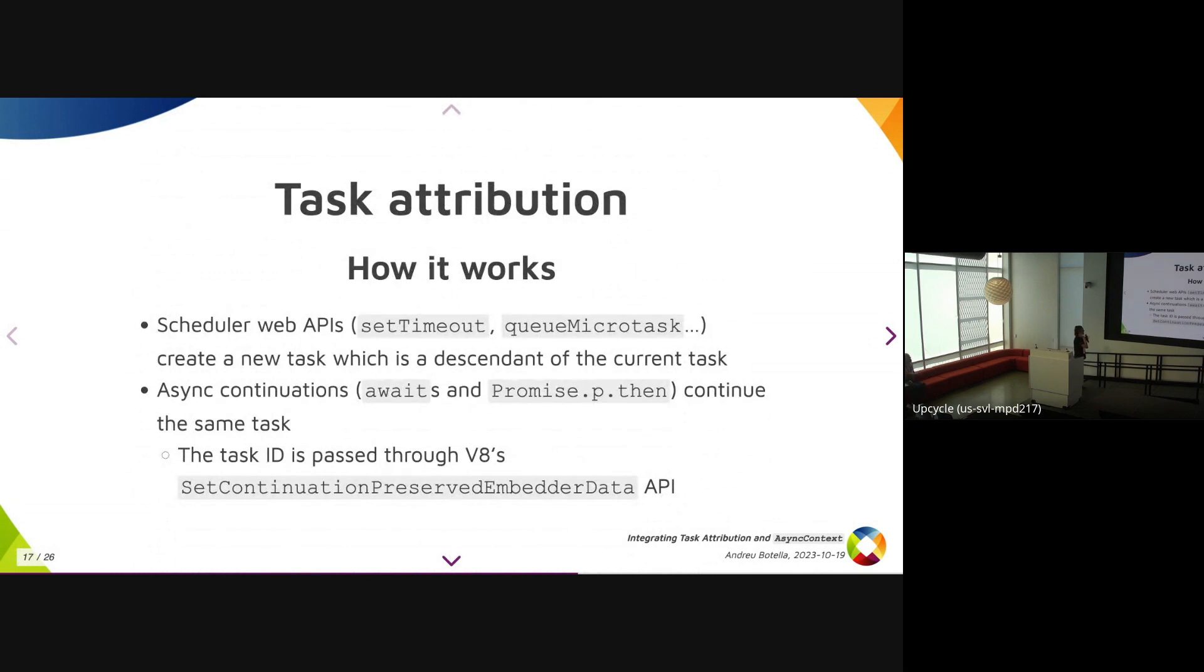And the way that this works is that any scheduler web APIs, setTimeout and so on, they create a new task which is a descendant of the current one. So this is tracked by task attribution as a descendant, but async continuations, that is any await and any promise.then, they continue the same task. This is tracked with V8's setContinuationPreservedEmbedderData API, which basically you set the current task, and V8 handles the continuation by itself.